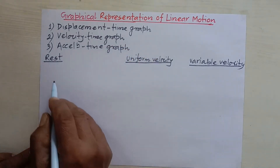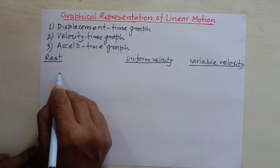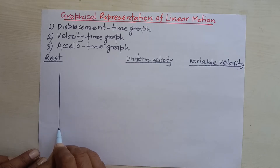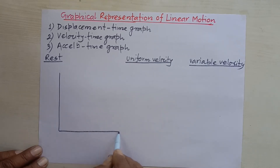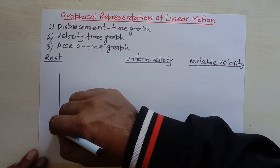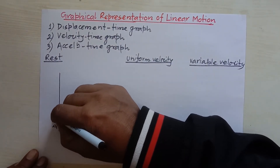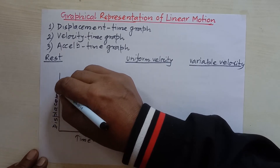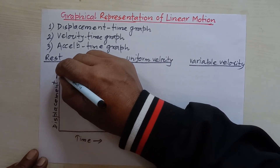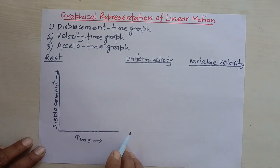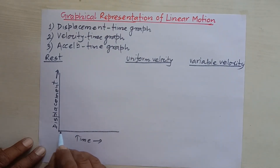First you have to understand what is a displacement-time graph. A displacement-time graph is a graph in which time is taken on the x-axis and displacement is taken on the y-axis.